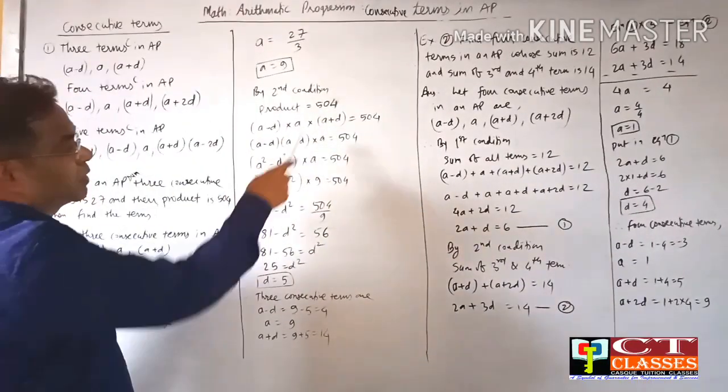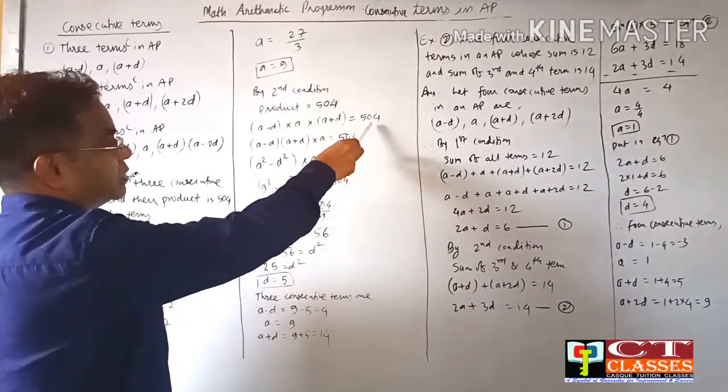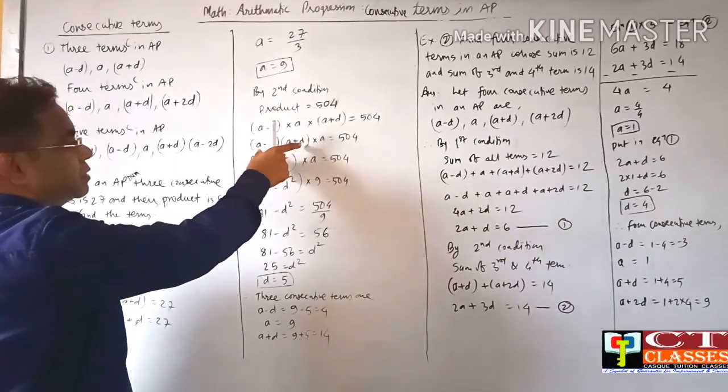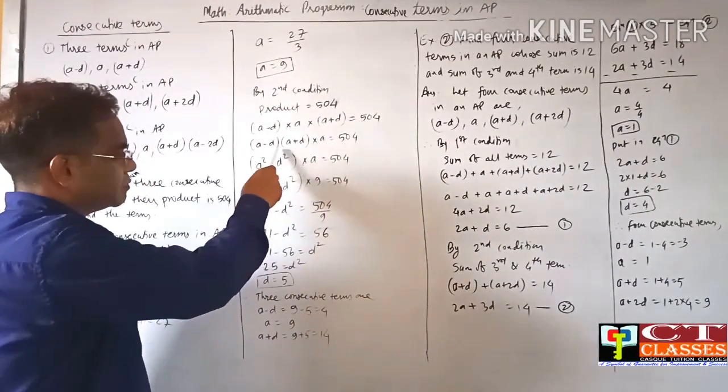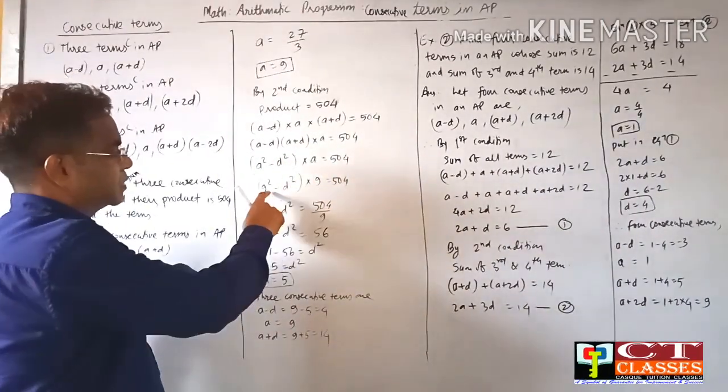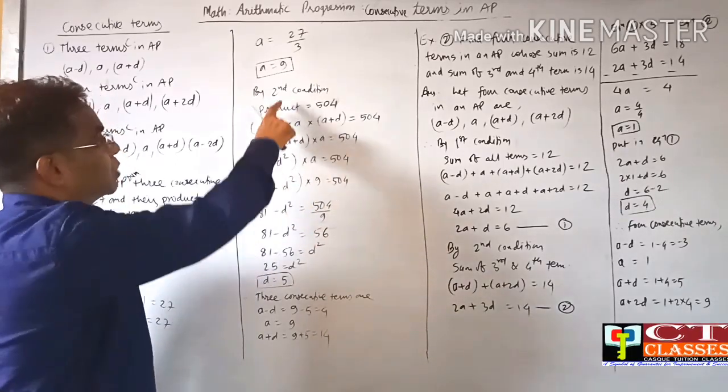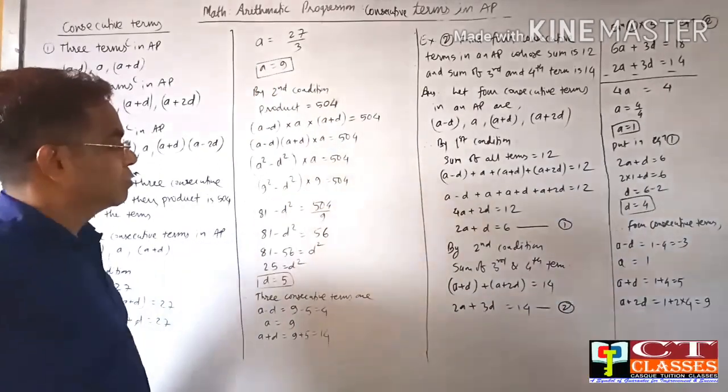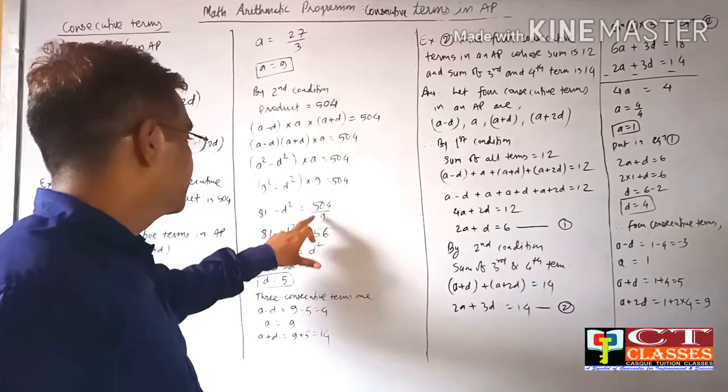Second condition: product equals 504. So (a-d) × a × (a+d) = 504. We can rewrite (a-d)(a+d) as a²-d² using the identity. So (a²-d²) × a = 504. Since a = 9, we have (81-d²) × 9 = 504.